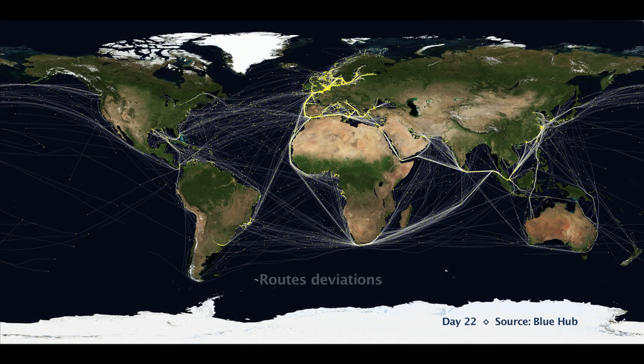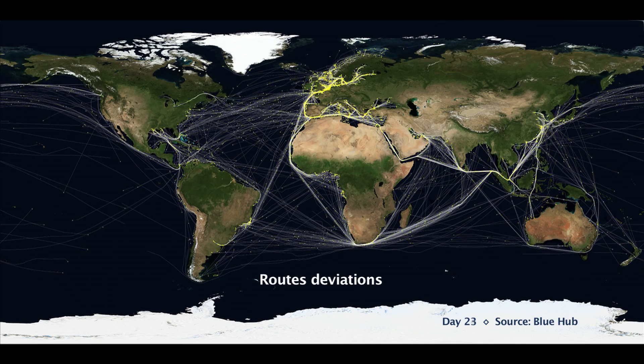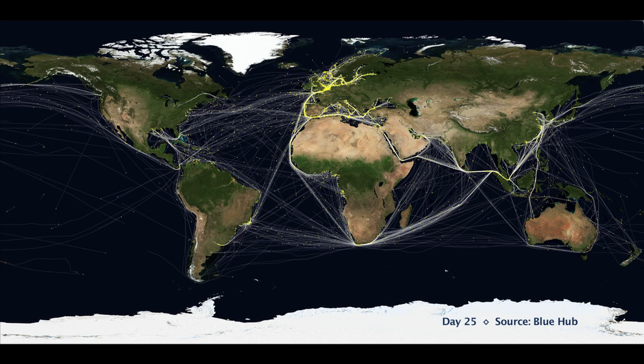And by detecting anomalies, we can find deviations from usual shipping routes, which might be an indication of illegal activities taking place at sea.